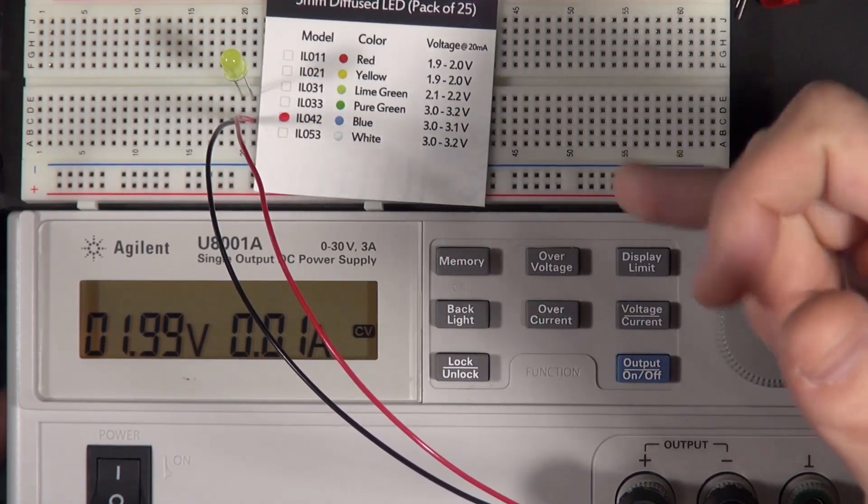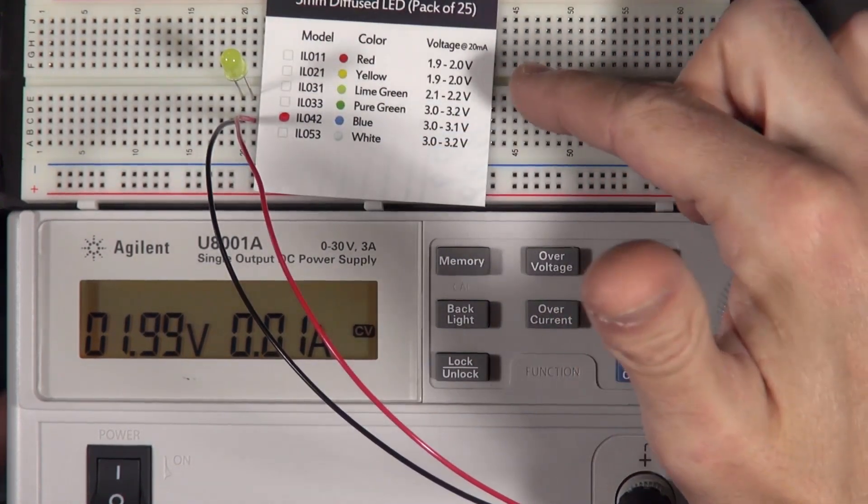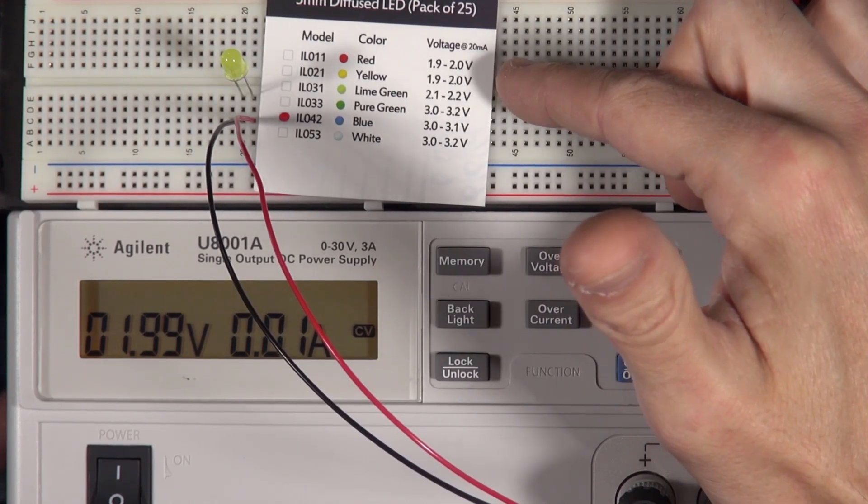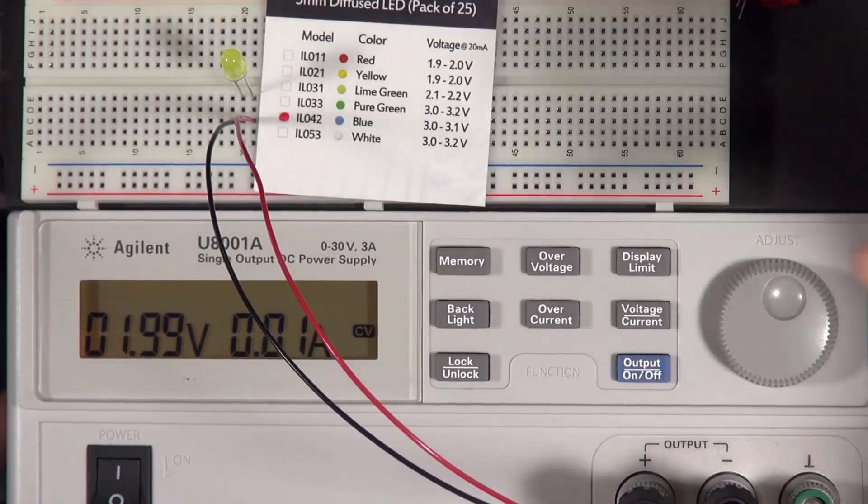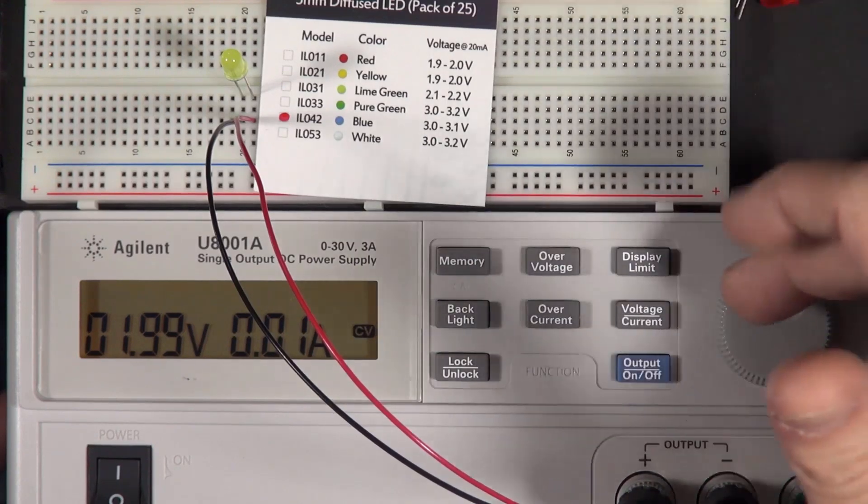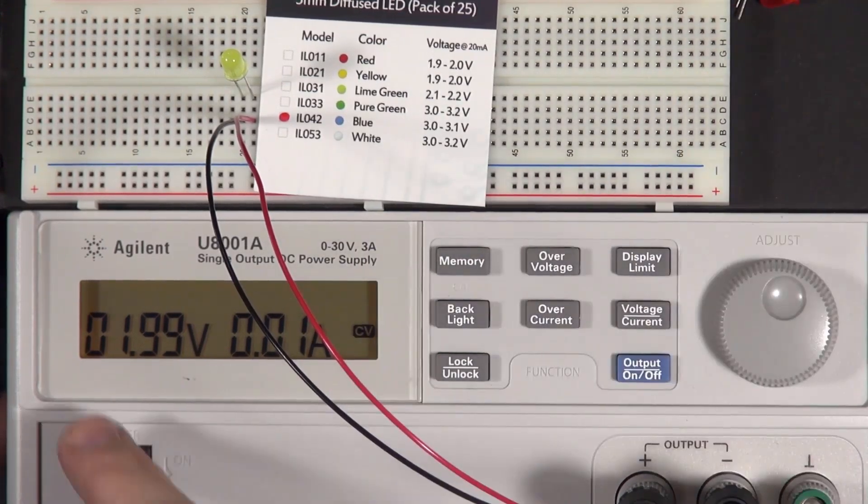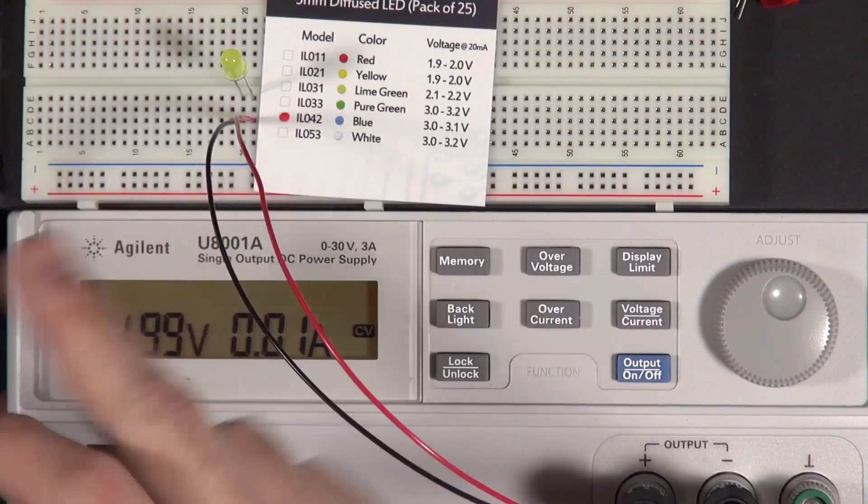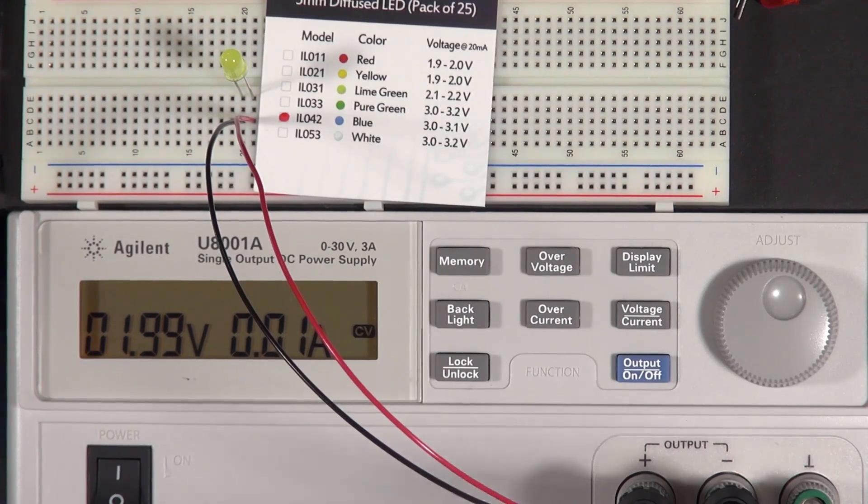So, it's very important with an LED to make sure that we stay within the voltage that the manufacturer specified. Otherwise, it will draw a ton of current, and it'll destroy itself. And that's actually what's happened here. You can see, we're giving it 2 volts. It's not on. This LED is dead. I have to throw it out now. It's no good.